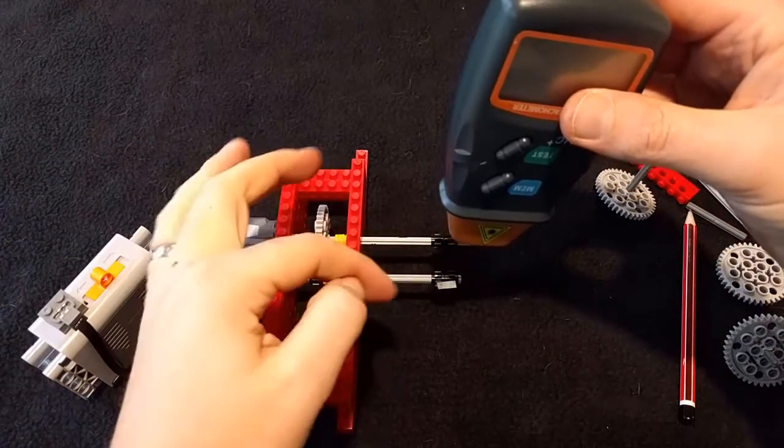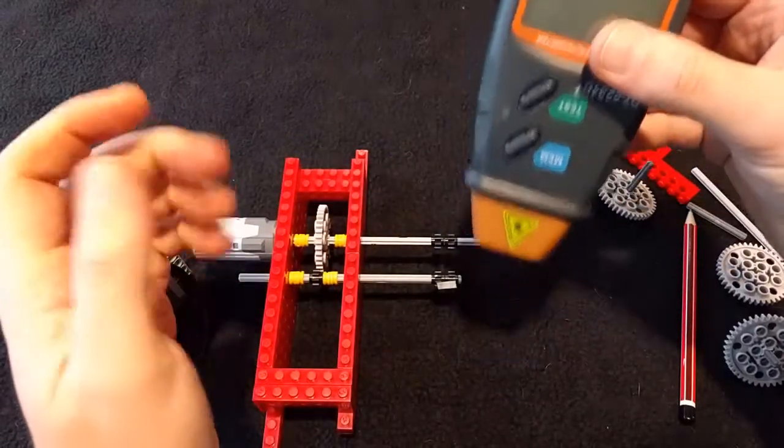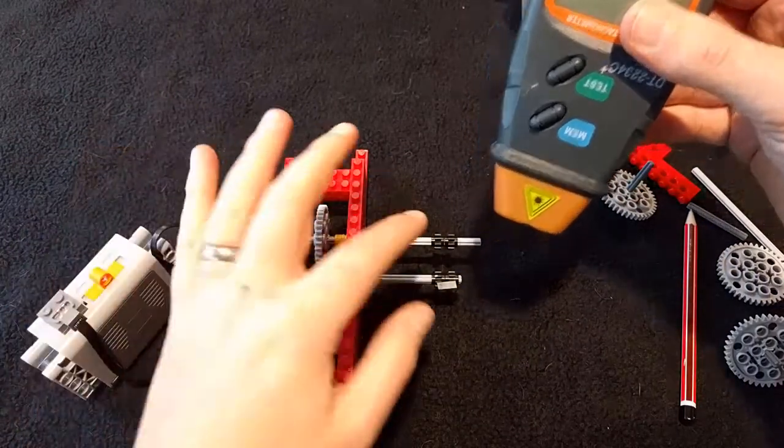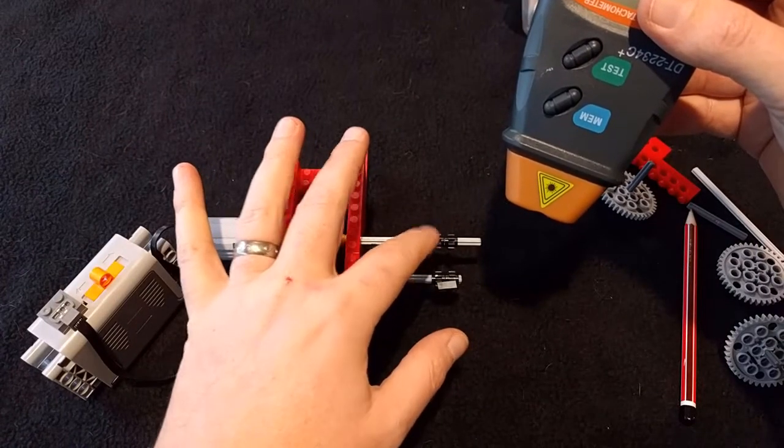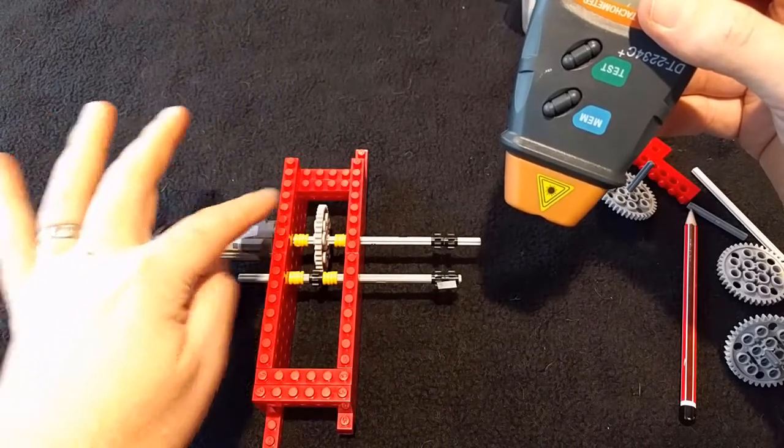What happens is, as it spins around, every time it spins around and the reflective bit comes up, this counts it, so I can detect how many times it's spinning around. You can't see it on here, but there is a piece on the other side of that axle and there's a piece on this axle.